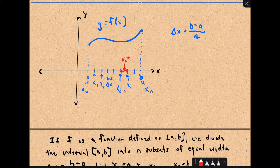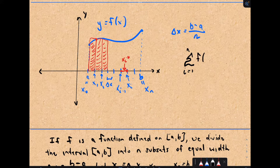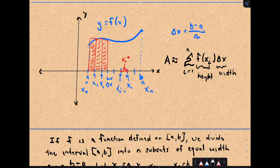If I use right endpoints, my first rectangle — I know the width, and I could compute the height by plugging x sub 1 into our function. I would keep doing this for every rectangle over the entire region and add those up. So the shorthand is: summation from i equals 1 to n of f of x sub i multiplied by delta x. The f of x sub i gives me the height of my rectangle, and delta x represents the width, which is fixed for all of them — the height is changing. This just says add all n of them up. So right now this would be an approximation.